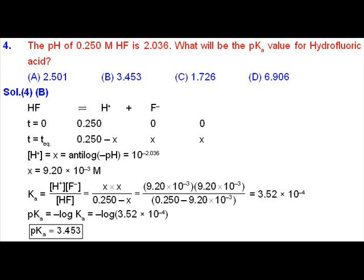Coming to the solution part, first of all we will write down the dissociation reaction of HF, and then we will write the concentration of HF as well as the ions at t=0 and at equilibrium. At t=0, concentration of HF is 0.25 and H⁺ and F⁻ are absent.